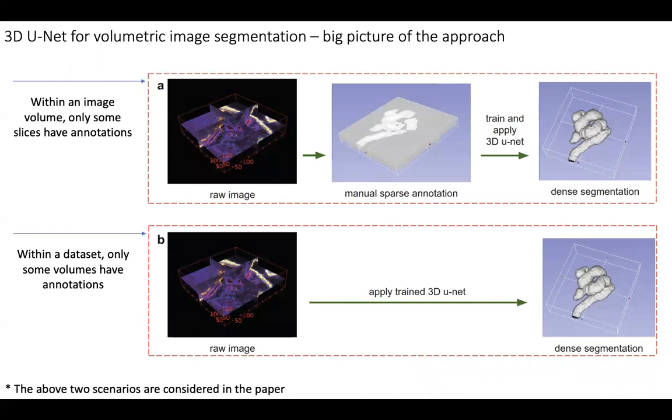Now let's first talk about the approach at the very high level, big picture. So this paper considers two particular scenarios. The first scenario: for a particular volume image, we do not really have all the segmentation masks for each slice for the whole volume. Instead, we may only have a segmentation mask for some of the slices and we want to train a 3D U-Net for segmenting the whole volume.